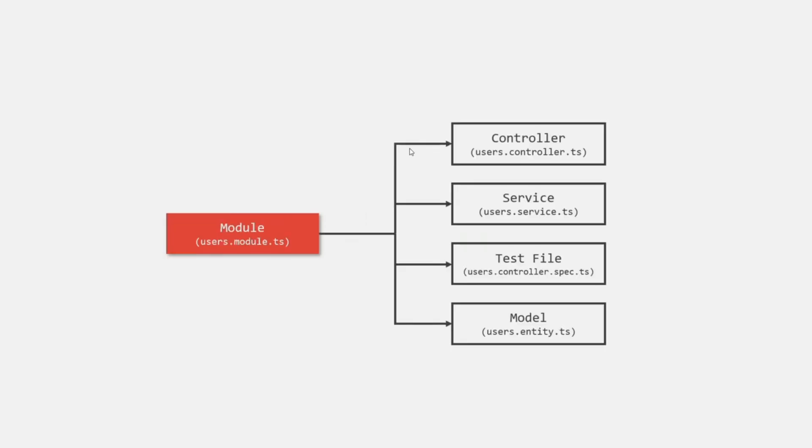Now when we create a module for a user, that module will be the entry point for that specific functionality. Now each module has some files associated with it, and there are two main files of a module: the controller file and the service file.